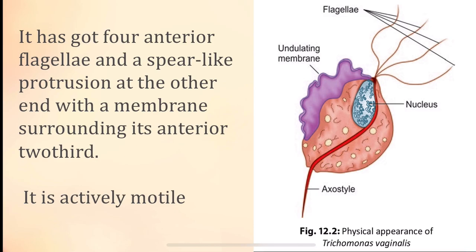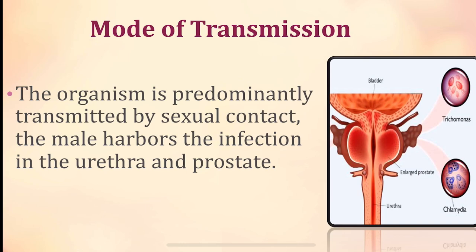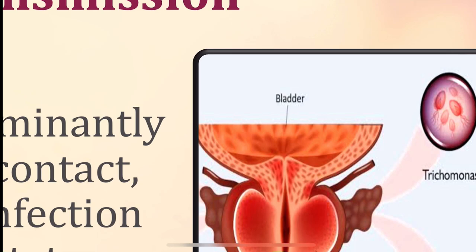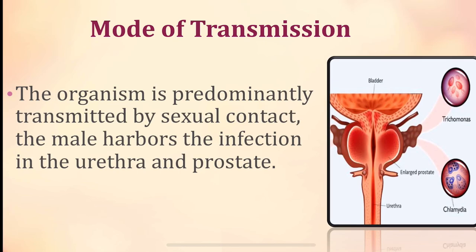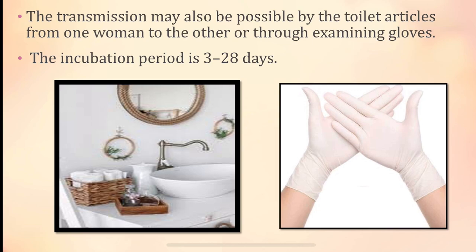The mode of transmission of trichomoniasis is bisexual contact — the male harbors the infection in the urethra and prostate and can transmit it sexually to the female. Transmission may also be possible by toilet articles from one woman to another or by examining gloves used without proper cleaning. The incubation period is three to twenty-eight days.